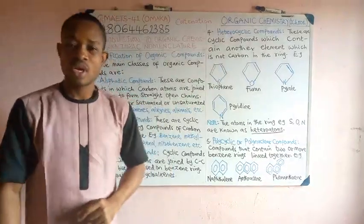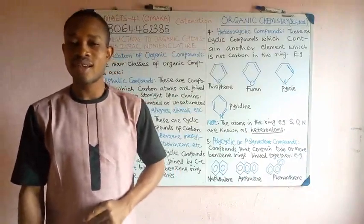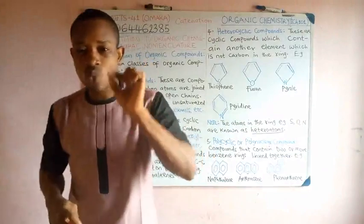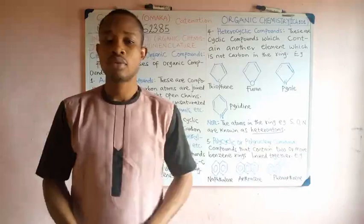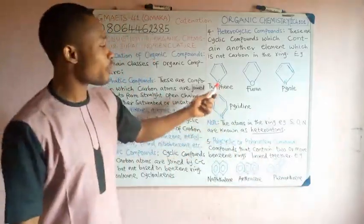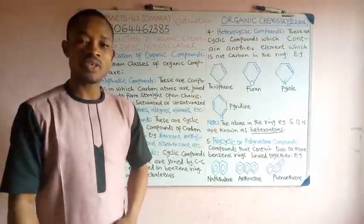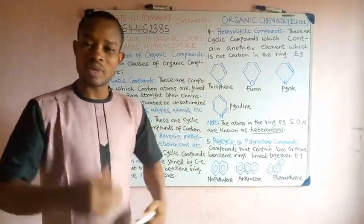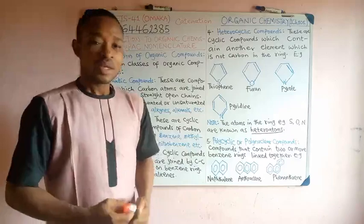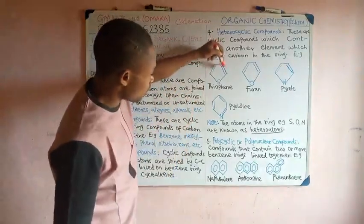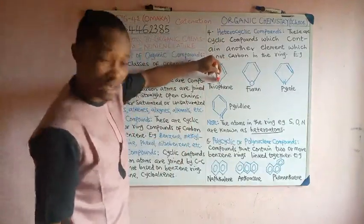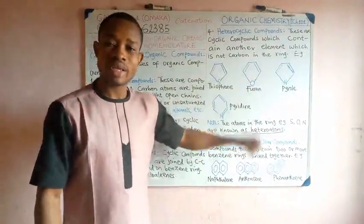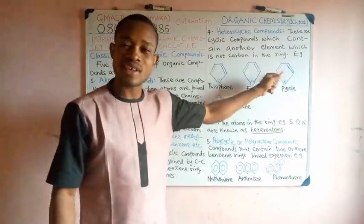We now want to look at the next classification, heterocyclic compounds. Heterocyclic compounds are just like cyclic compounds. The only difference is that in heterocyclic compounds, within the cycle, you would see one atom which is not carbon. The atom could be sulfur, it could be oxygen, it could be nitrogen. Some examples here: thiophene, sulfur is seen in the ring. This looks like cyclopentadiene. We have carbon here, carbon, carbon, carbon, but at this point there is supposed to be carbon, it is now replaced with sulfur. We call this thiophene. This is furan. Oxygen is the heteroatom there. We call this pyrrole. Nitrogen is the heteroatom.